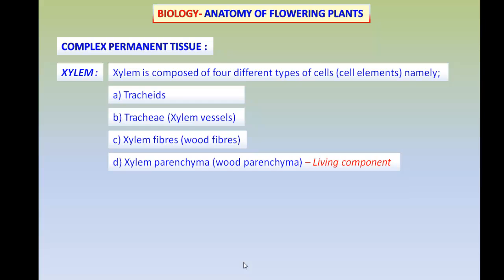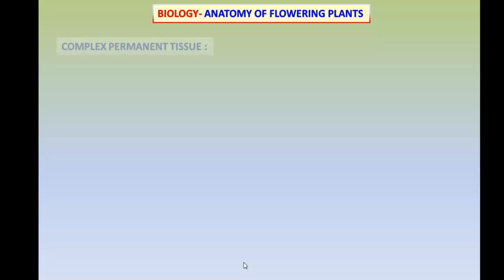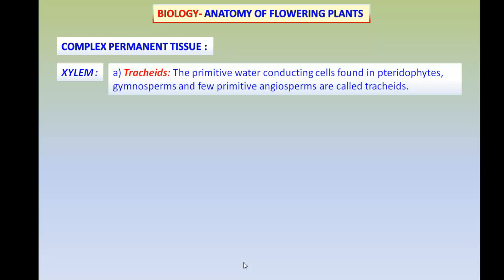Among these four, xylem parenchyma is the only living component, whereas the tracheids, tracheae, and xylem fibers are all dead cells. However, they are important because they are directly involved in the conduction of water and minerals.